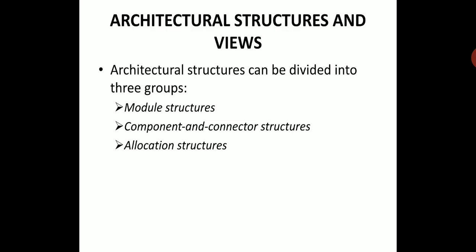The three groups are: one is module structure, second one is component and connector structure, and the third one is allocation structure. Coming to the module structure, the elements we are considering are nothing but modules. Each module is a single unit of implementation, and the modules will represent the code-based way of considering the system. They will be assigned a specific functional responsibility.